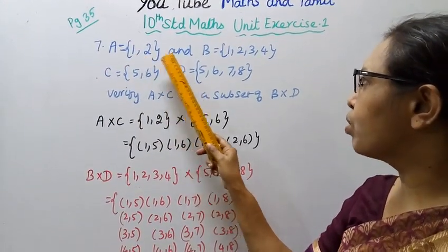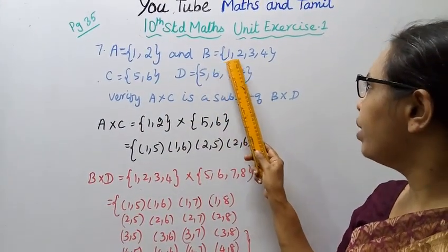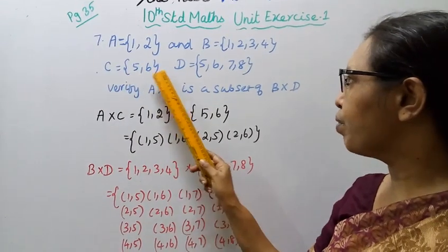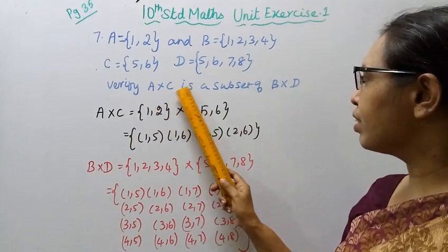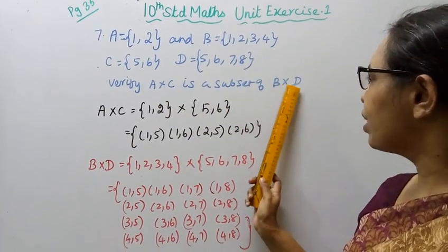Given A equals 1,2 and B equals 1,2,3,4. C equals 5,6 and D equals 5,6,7,8. We need to verify A cross C is a subset of B cross D.